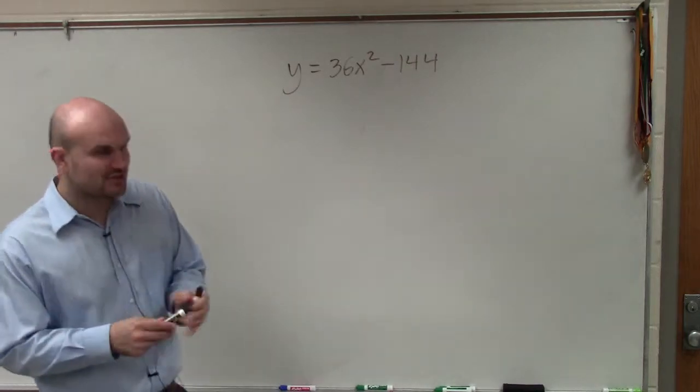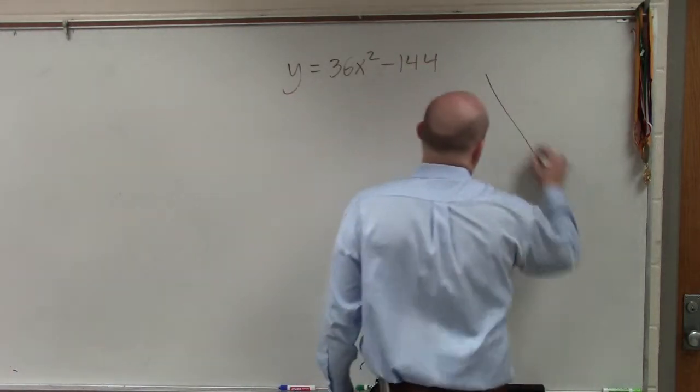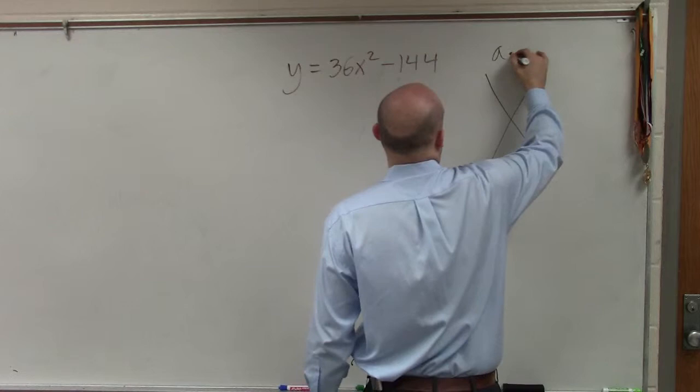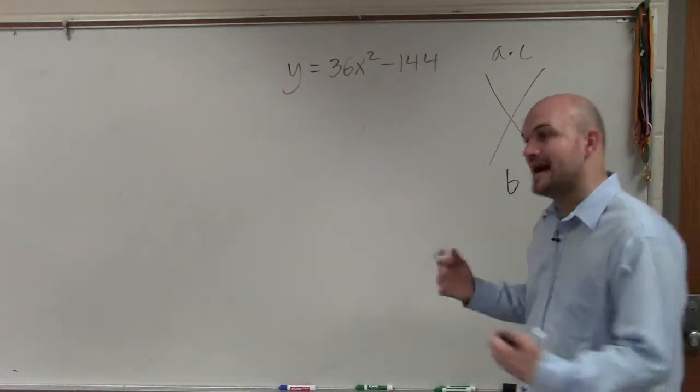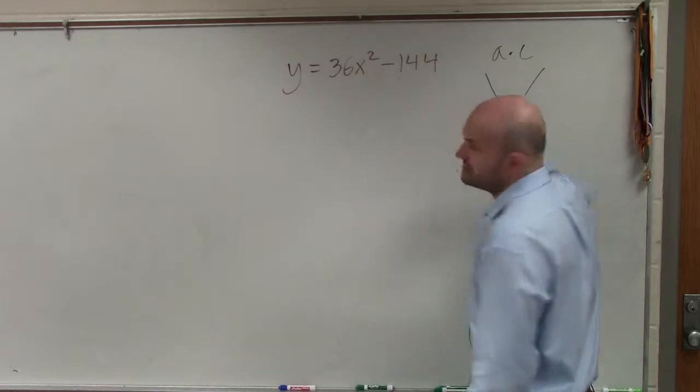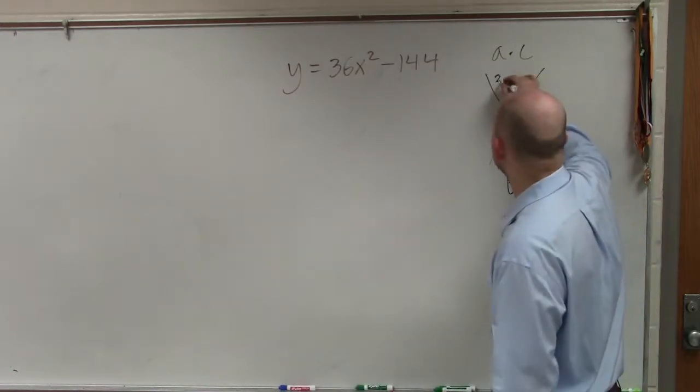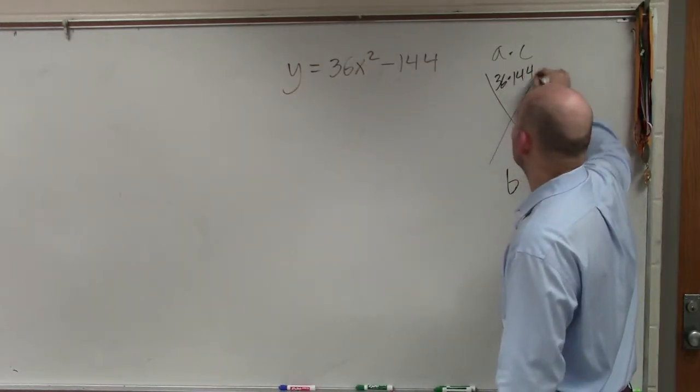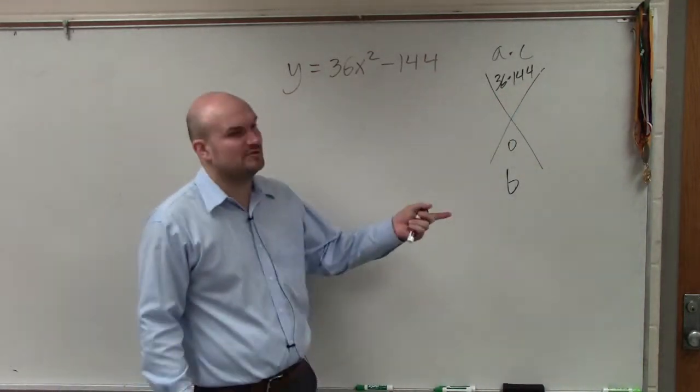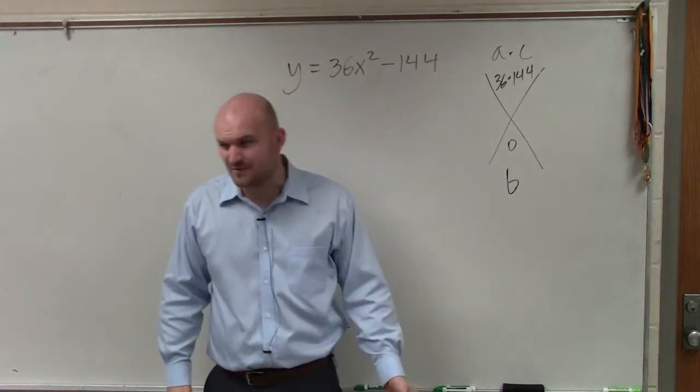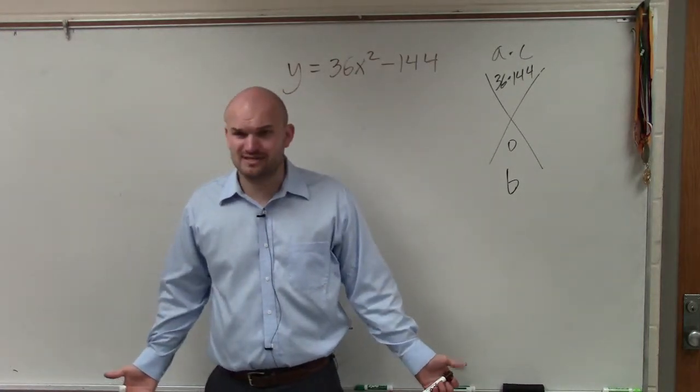Students automatically look at this and notice that a is not equal to 1. If you did the diamond method, you'd have to do a times c, which would be 36 times 144, and then find two numbers that multiply to that but add to 0. Does anybody really want to multiply 36 and 144 and figure that out? That doesn't sound like a lot of fun.